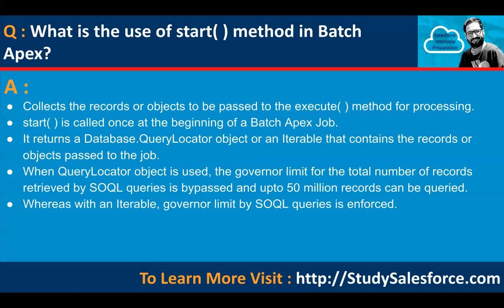What is the use of the start method in Batch Apex? It collects the records or objects to be passed to the execute method for processing. Start is called once at the beginning of a batch Apex job. It returns a Database.QueryLocator object or an iterable containing the records passed to the job. When a QueryLocator object is used, the total number of records retrieved by SOQL queries is bypassed and up to 50 million records can be queried. Whereas with an iterable, the governor limit for the SOQL query is enforced.